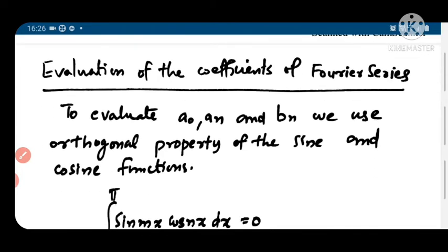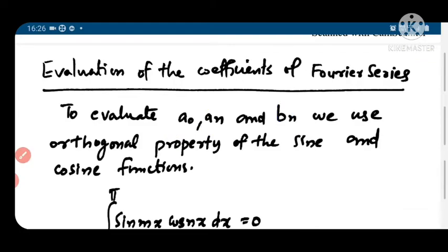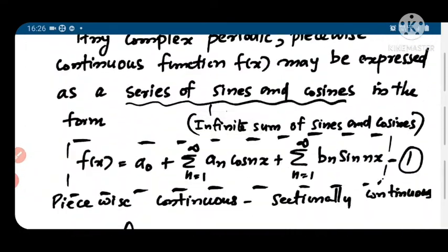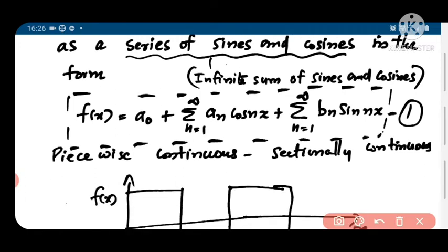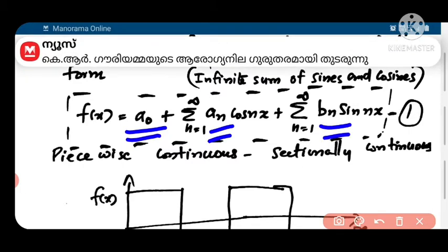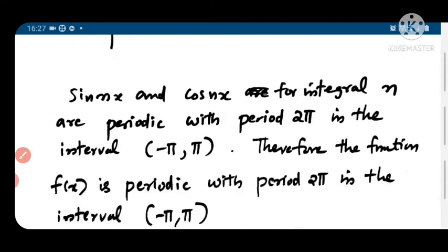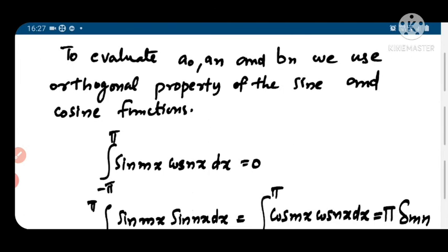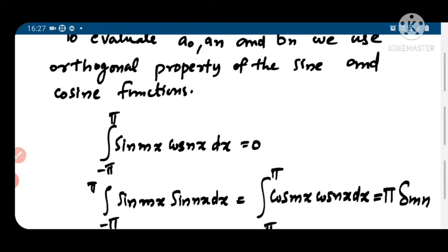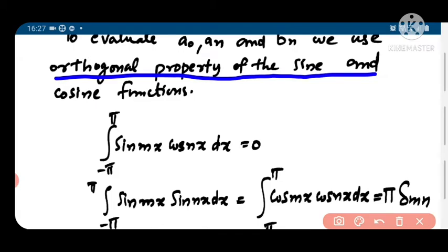Now let us look at the evaluation of the coefficients of the Fourier series. The coefficients are a0, a_n, and b_n. We have equation 1: f(x) written with coefficient a0, then a_n for n=1 to infinity, and b_n for n=1 to infinity. We evaluate a0, a_n, and b_n using the orthogonal property of the sine and cosine functions.